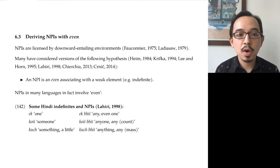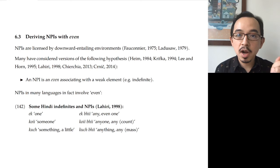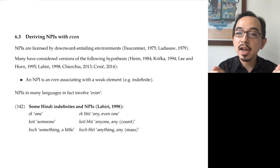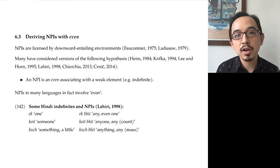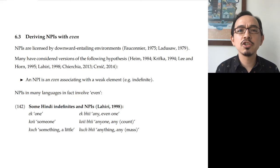There are a number of languages where quite explicitly that is how you form NPIs. Hindi is one such language — this is Utpal Lahiri's work. In Hindi, you can say 'one' (ik), or you can use this even particle, literally 'even one' (ikbhi), and that's how you say 'any' — NPI any. Similarly, you can take other indefinites, other weak elements on scales like 'someone' or 'something,' add even, and create corresponding NPIs. The question is: why should this be? How does it work? Is it actually predicted by the semantics?